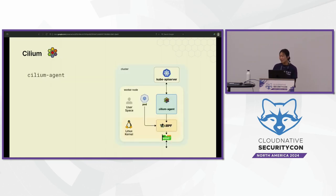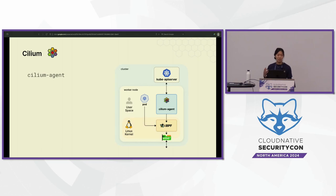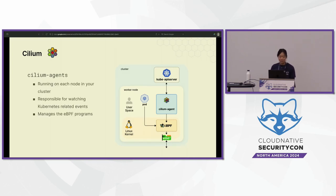At a high level, every single node in your cluster is running a Cilium agent, and the Cilium agent is based on the Envoy project — a stripped-down version that lets you leverage Envoy's cool features while running on each node. On your behalf it handles updating, watches the Kube API server for Kubernetes-related events, and also manages the eBPF programs. So essentially Envoy was taken and made into a Cilium agent that benefits from the eBPF side of things.